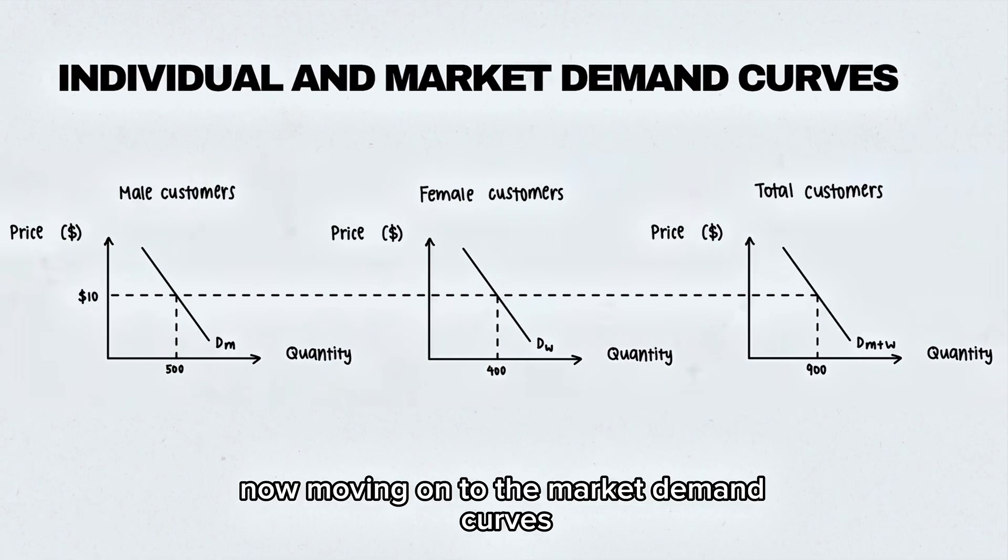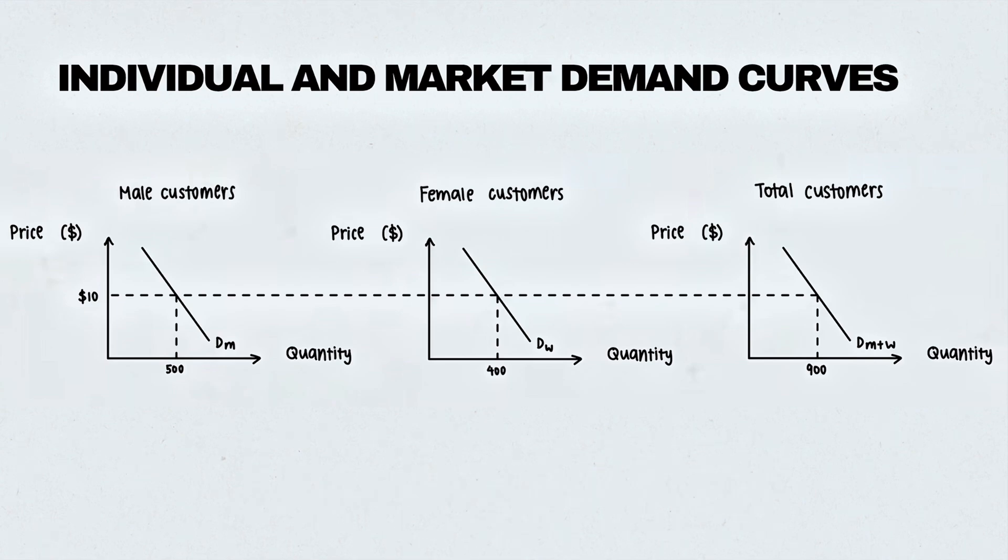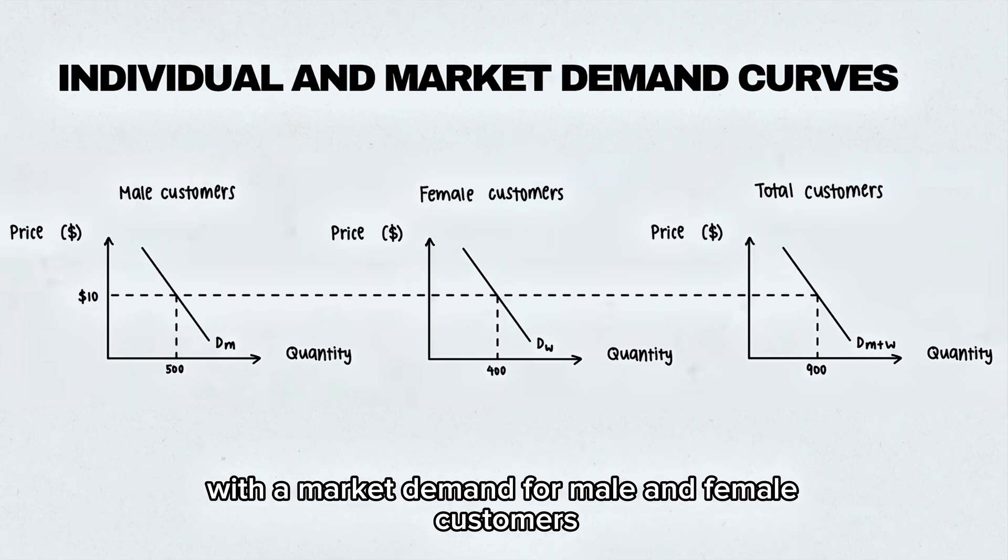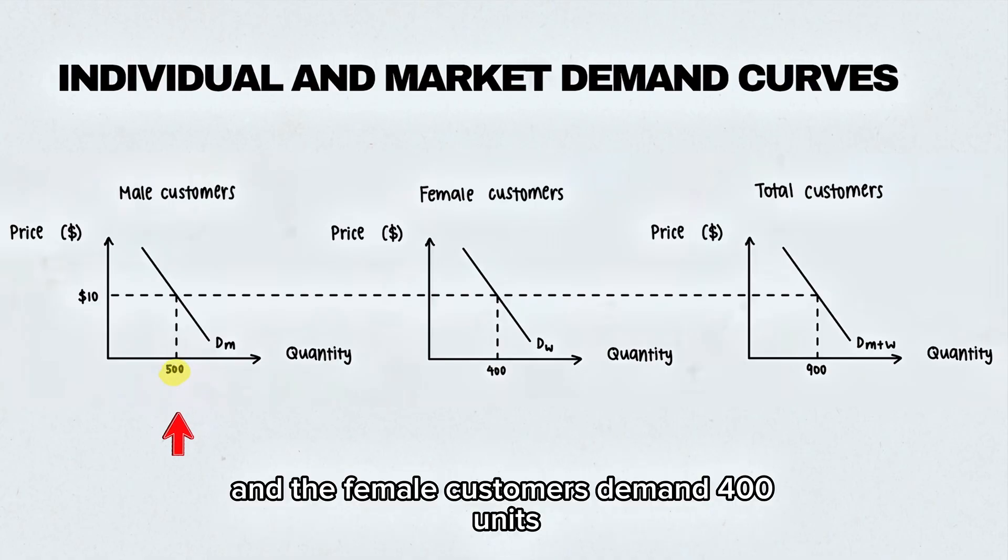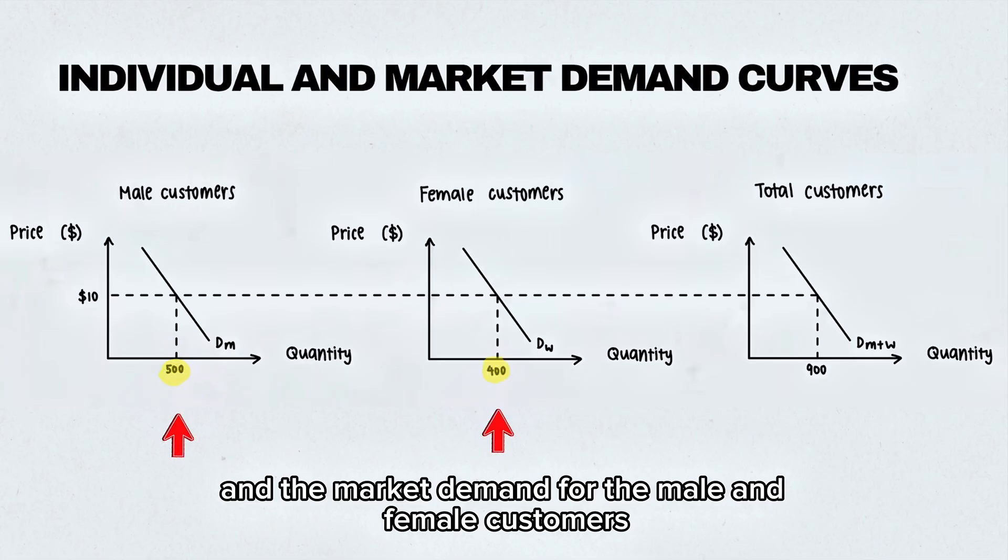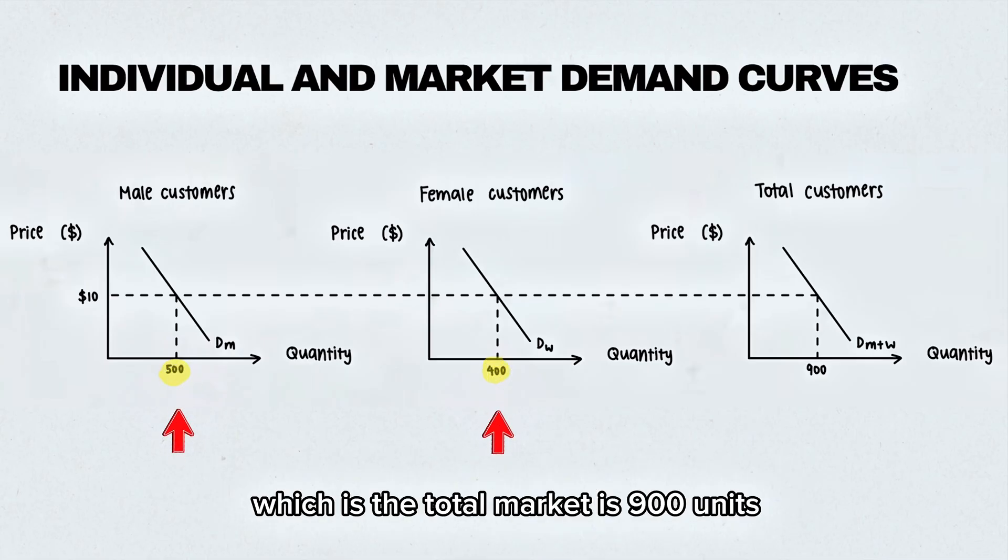Now moving on to the market demand curves. This is my hypothetical example with a market demand for male and female customers for a particular product. The male customers demand 500 units and the female customers demand 400 units, so the market demand for male and female customers, which is the total market, is 900 units.